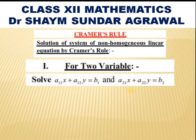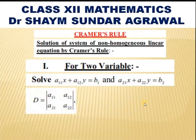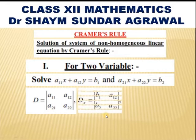First, let us solve for 2 variables — a linear equation in 2 variables: a₁₁x + a₁₂y = b₁ and a₂₁x + a₂₂y = b₂. First we have to find the determinant of the coefficients of x and y, that is |a₁₁ a₁₂ / a₂₁ a₂₂|, which is denoted as D.